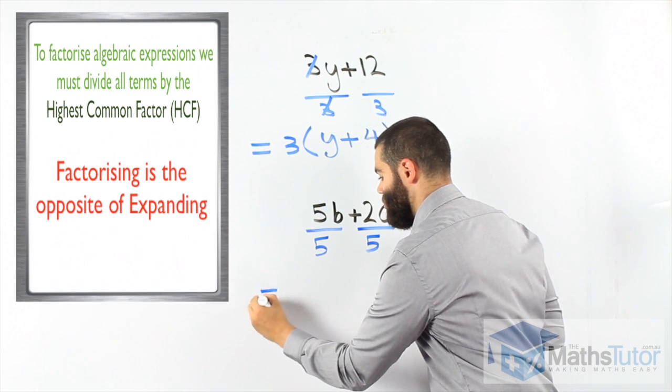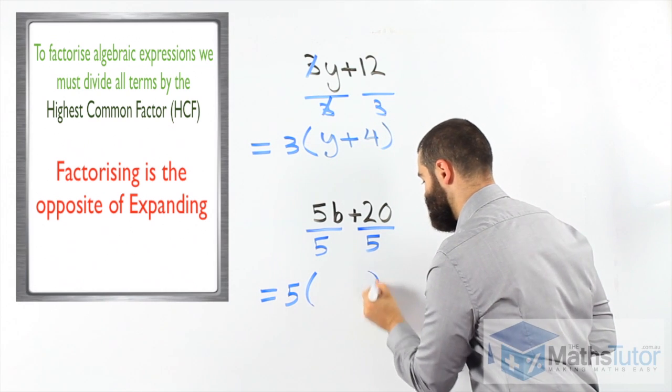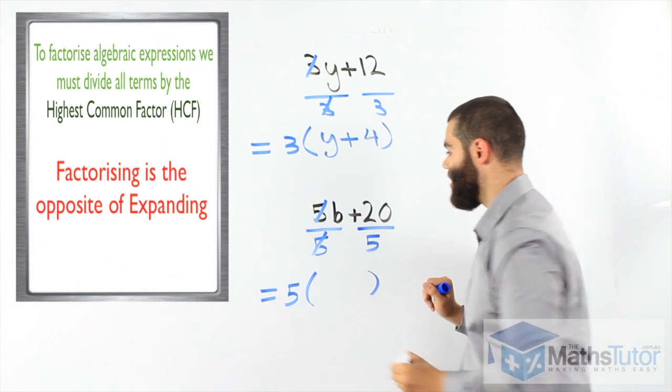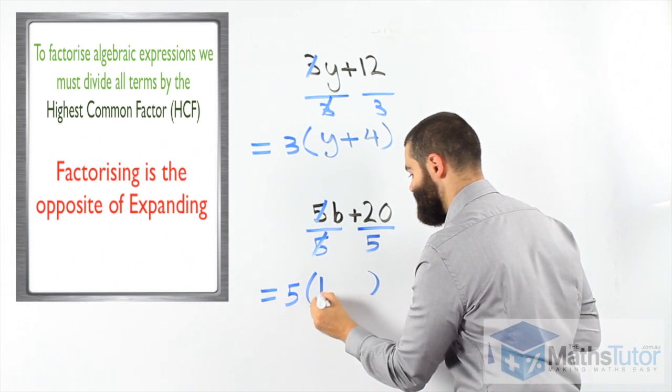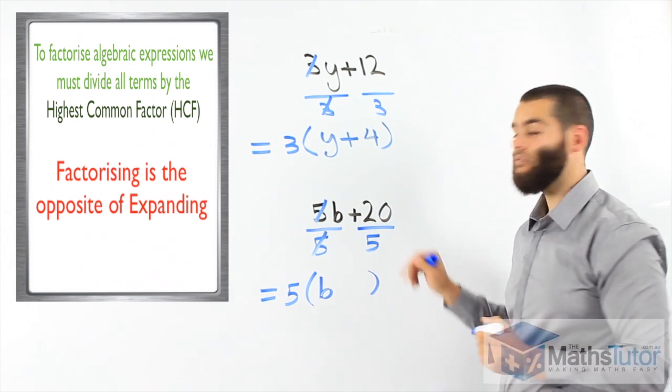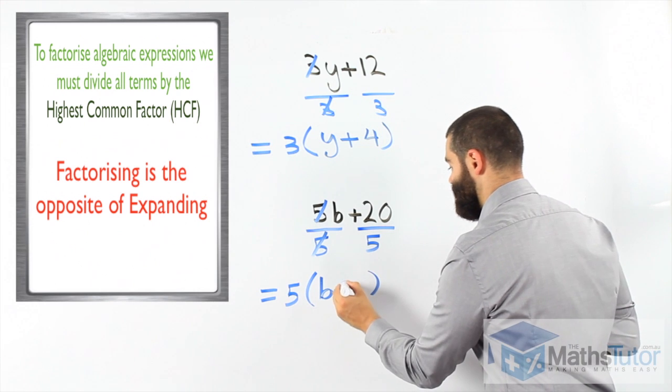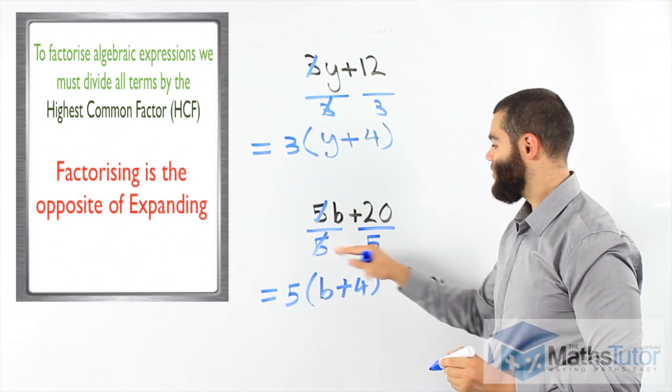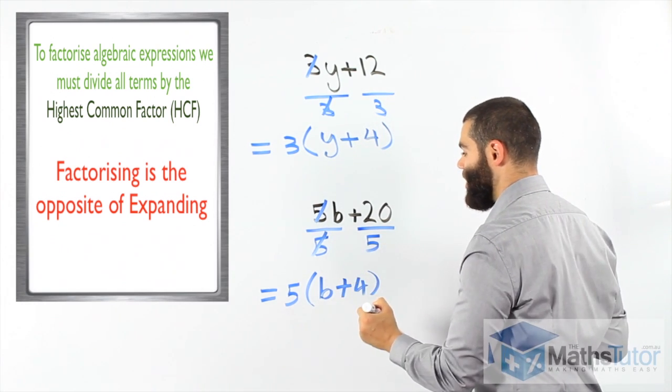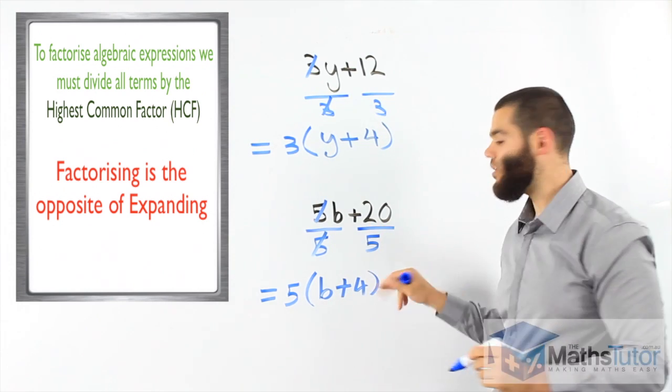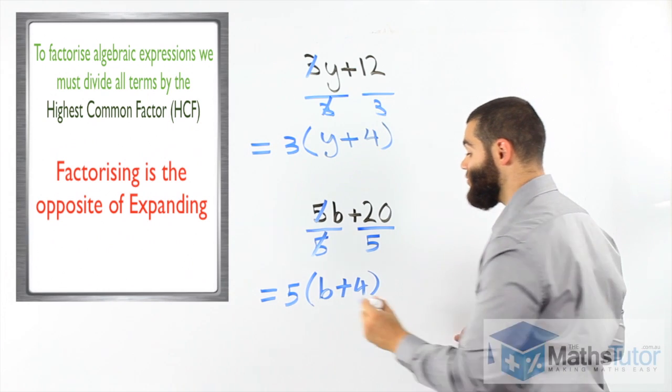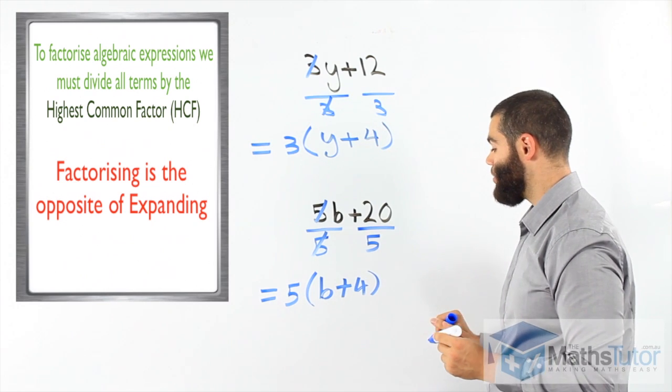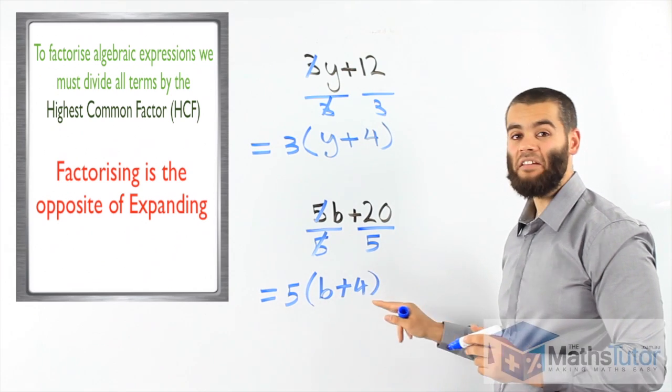Now, we put the highest common factor outside, we put our brackets, now when we divide, 5 divided by 5 is 1, 1b and positive 20 divided by 5 is positive 4. So, divided by 5, we have 1b or just b, 20 or positive 20 divided by 5, positive 4, we can see here 5, open bracket, b plus 4, close bracket, this is our answer.